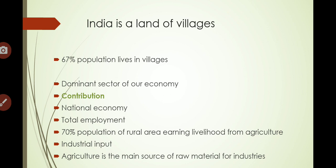Agriculture contributes in various ways. One is the national economy — the national income of India, about 31.6 percent, is contributed by agriculture, while the manufacturing sector contributes 17.6 percent. It also contributes to total employment; around 65 percent of the population is working and dependent on agriculture and related activities.